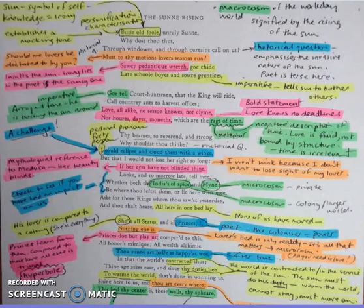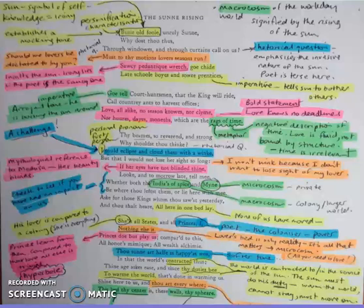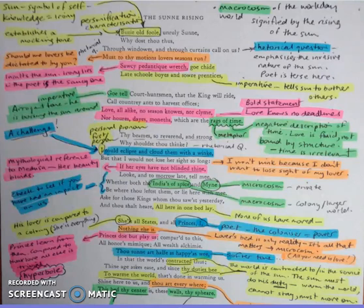And he states to the sun, he demands the sun, go and annoy schoolboys who are late, and sour apprentices, who are late for school and work. And go and tell court huntsmen that the king will ride. And call the country ants to the harvesters. So go about your busy work, is really what he's saying. And that reflects this idea at the start of this busy old fool, the sun being someone who doesn't really understand, just goes on with the busy routine.